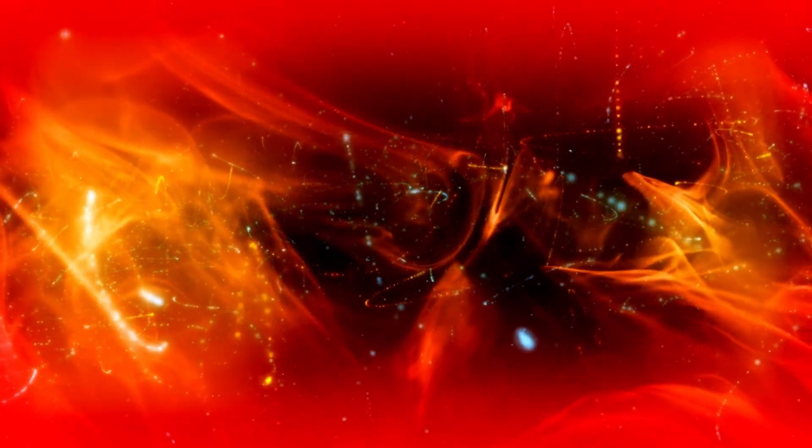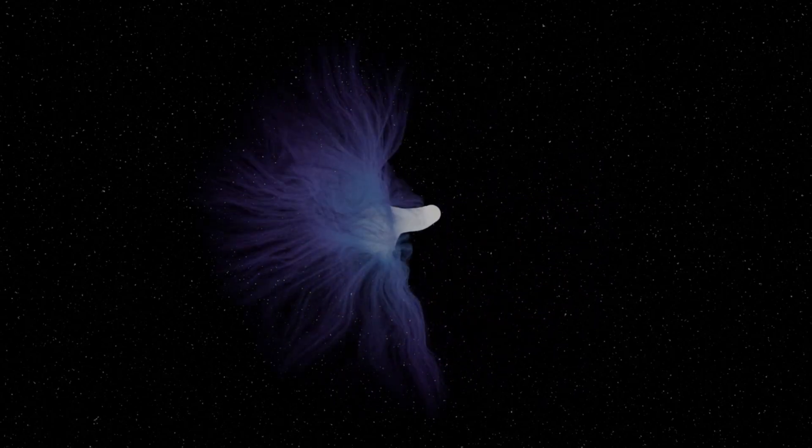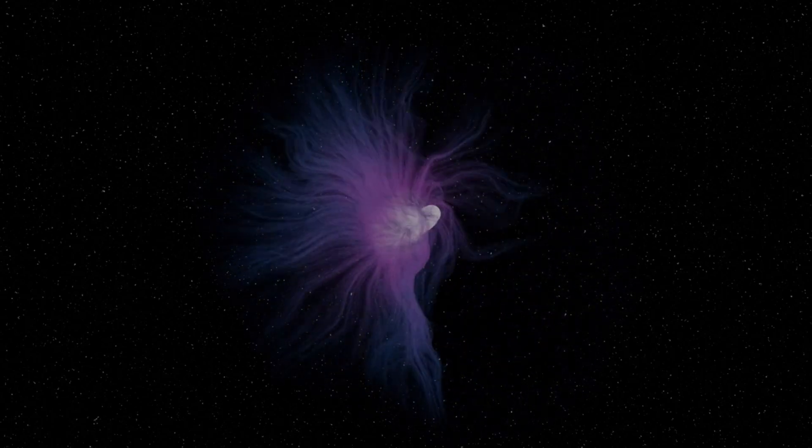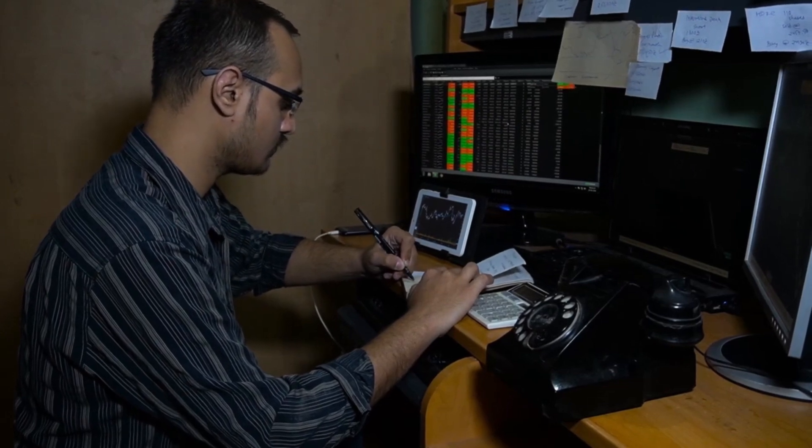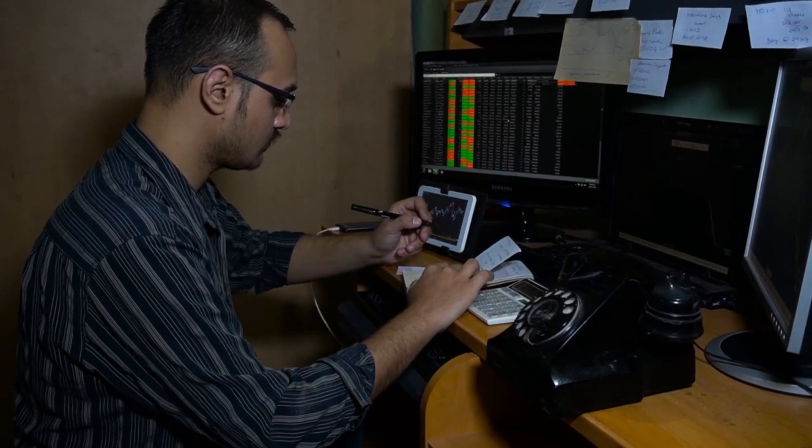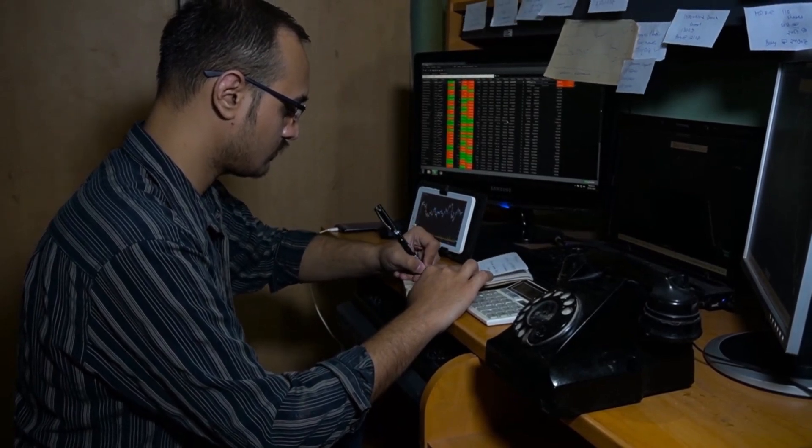Part of Betelgeuse's signature red coloration is due to its relatively cool surface temperature, about 3,500 Kelvin, substantially cooler than our sun, which has a surface temperature of roughly 5,500 Kelvin. This lower temperature means Betelgeuse emits less energy per unit area despite its immense size.